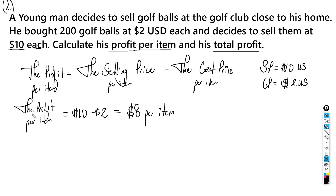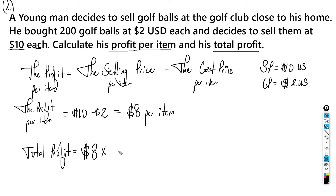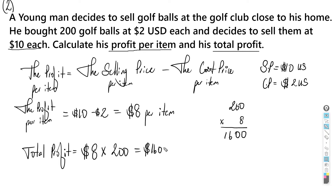To find the total profit from selling all 200 golf balls, we multiply the profit per item by the number of items: $8 times 200. Calculating that — 8 times 0 is 0, 8 times 0 is 0, 8 times 2 is 16 — so the total profit is $1,600. He earned a good amount selling golf balls; it just shows you can do a little hustle and earn some money.